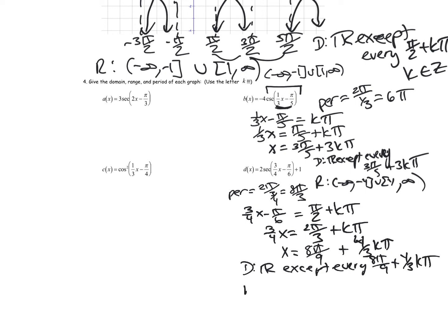For the range, following the order of operations I multiply the normal range by two, giving negative infinity to negative two, union two to infinity. Then I add one for the vertical shift up one, so the final range is negative infinity to negative one, union three to infinity.